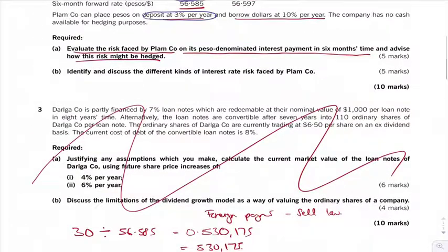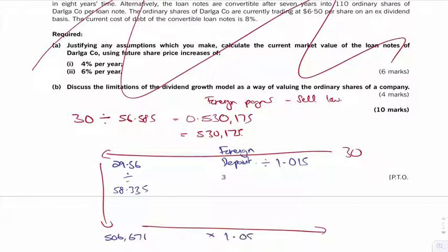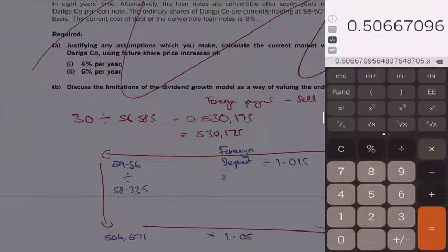it by our borrowing rate 10% per year, so times by 1.05 because it's only six months, times by 1